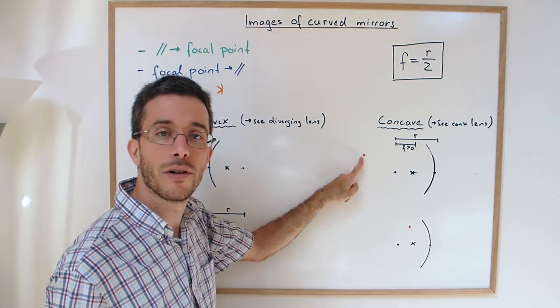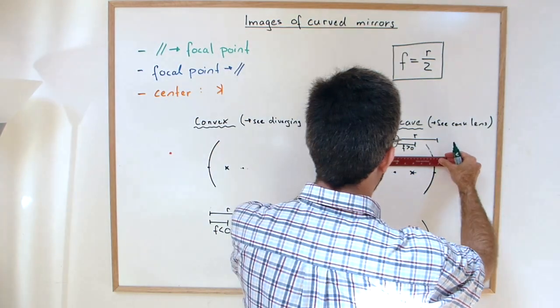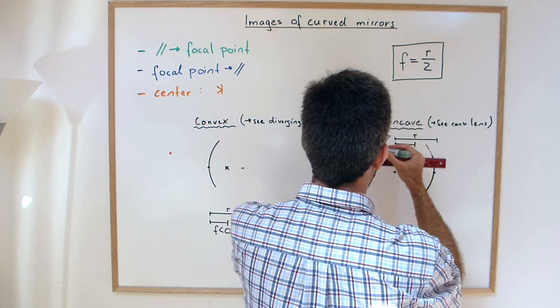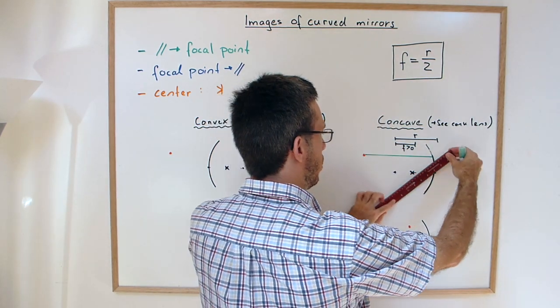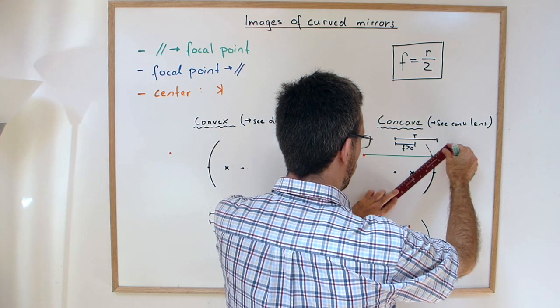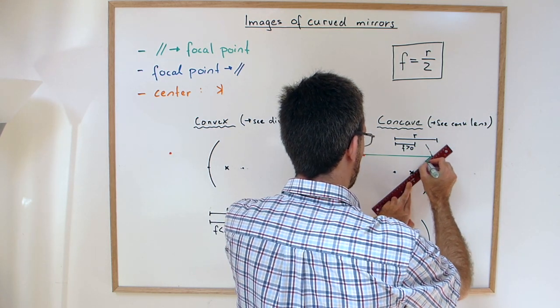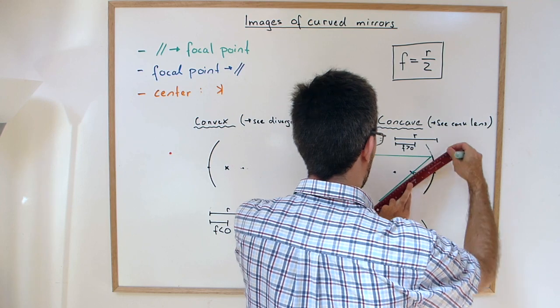So if we have an object here, if I put a ray that is parallel to the central axis, it will go through the focal point. Like this.